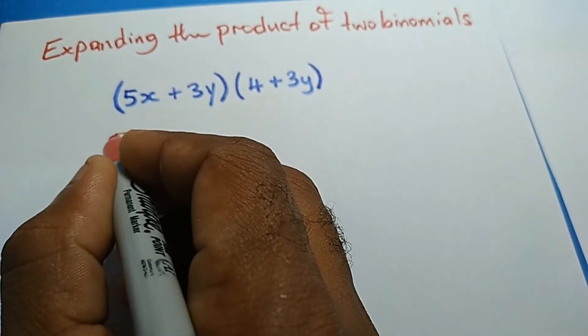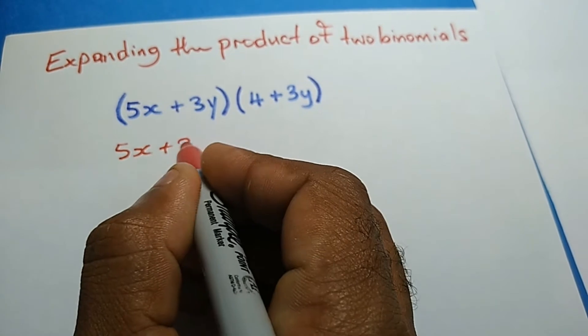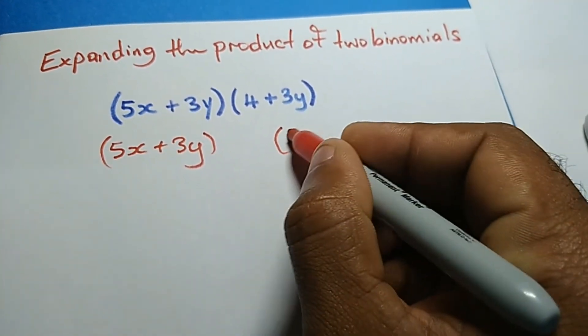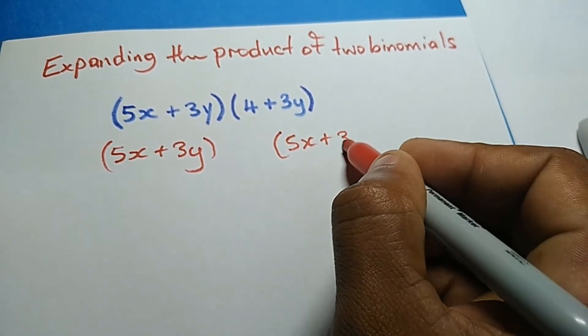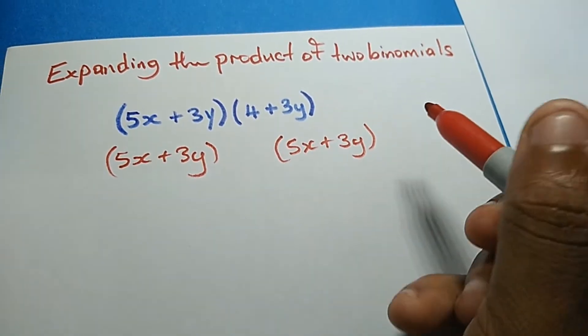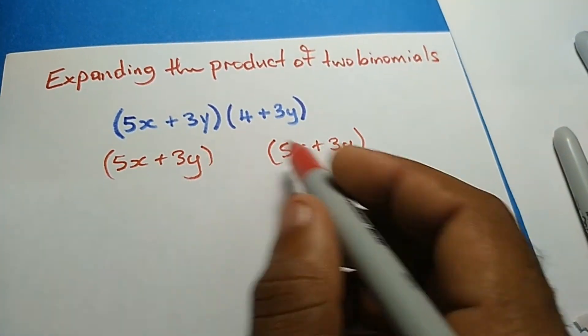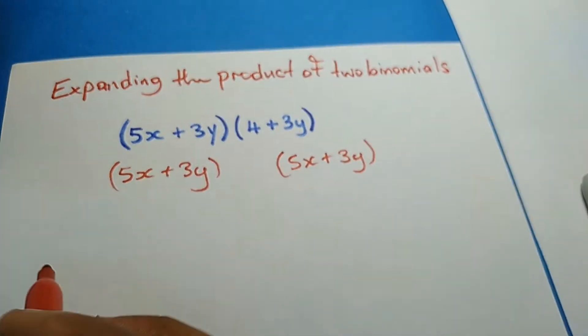I'm going to have 5x + 3y and 5x + 3y. Then I'll use each term from the other bracket to multiply one of these brackets.